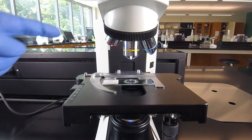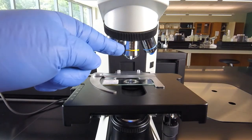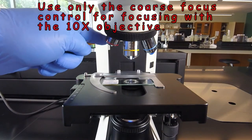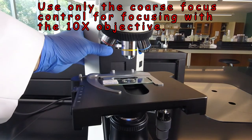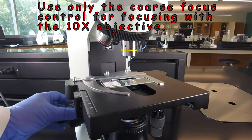Now, when we're focusing, we're using either the 4x or the 10x objective, the red striped one or the yellow striped one. All we really need for focusing is the coarse focus knob right here.